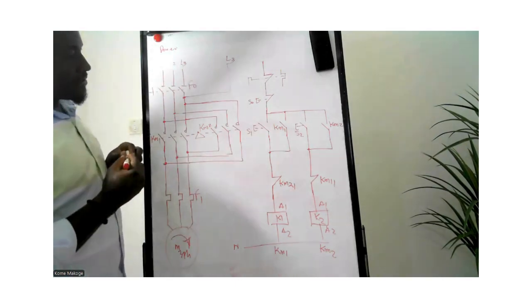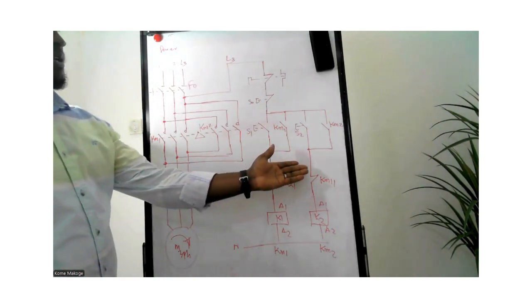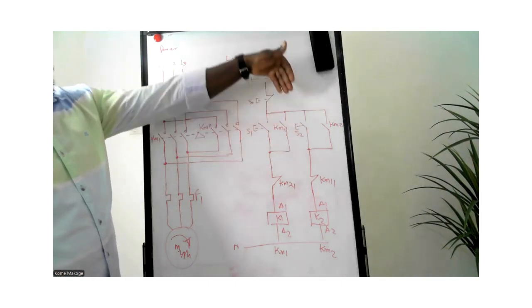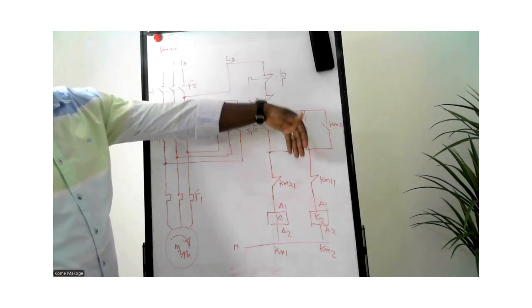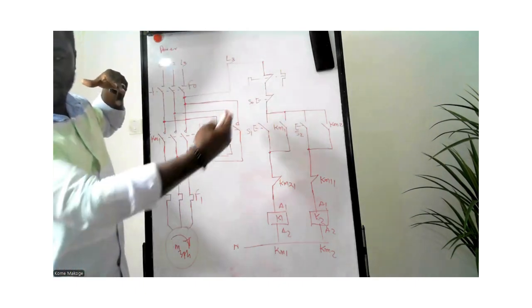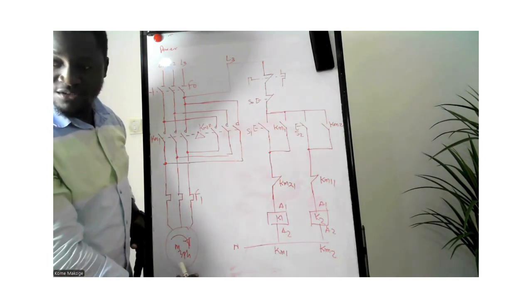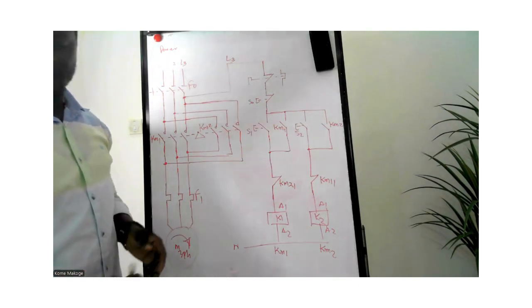Now what happens here is you look at the control circuit. What we'll be doing is explaining how the control circuit functions, and while we're explaining, we'll see how current flows to the power circuit, getting to the electric motor, and then you'll see how the motor rotates.